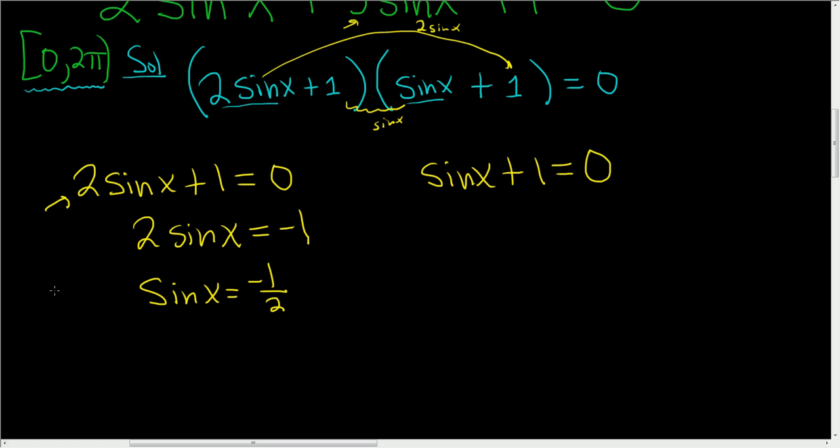Now here's where you have to draw on some trig knowledge. If you have this memorized, if you know that sin(π/6) = 1/2, then you know that the answers to this equation are all going to be multiples of π/6. So it's going to be one of these: π/6, 7π/6, 11π/6, or 5π/6.